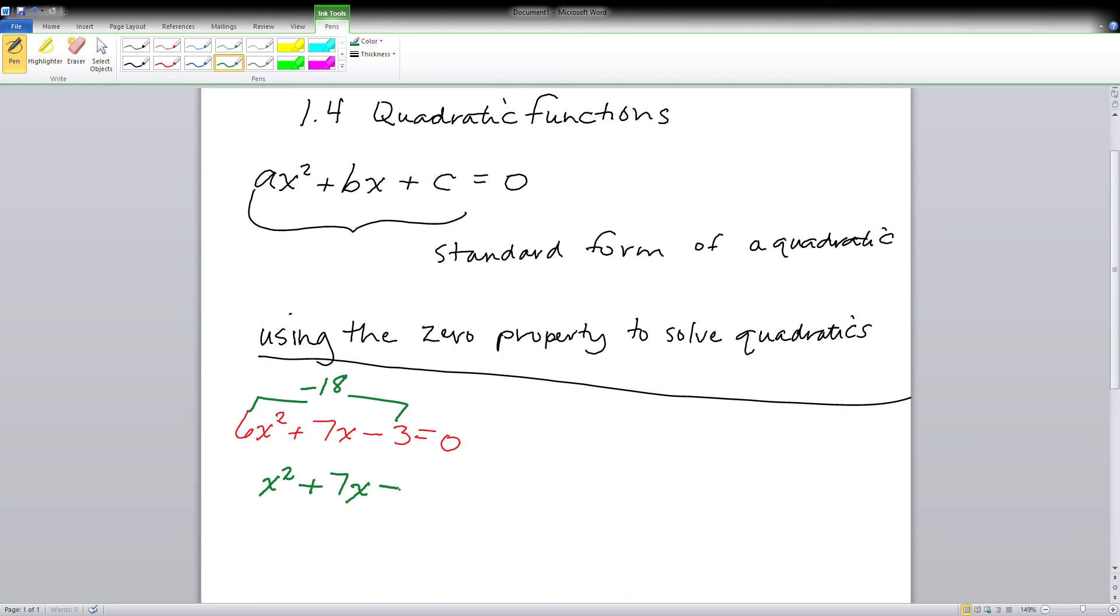I multiply the first coefficient by the constant, and that gives me -18 because of the -3. Then I am going to rewrite my trinomial without the lead coefficient, so x² + 7x, and I'm going to replace it with this -18.